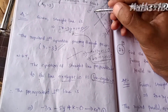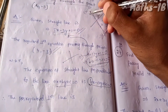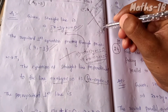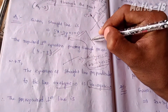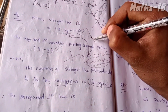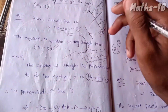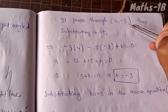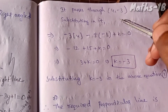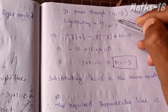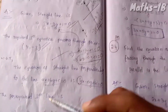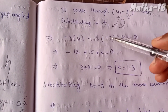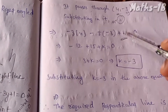Now we substitute the point (4, minus 3) into equation number 1 to find k. So we substitute x and y: minus 3 into 4, minus 5 into minus 3, plus k is equal to 0.